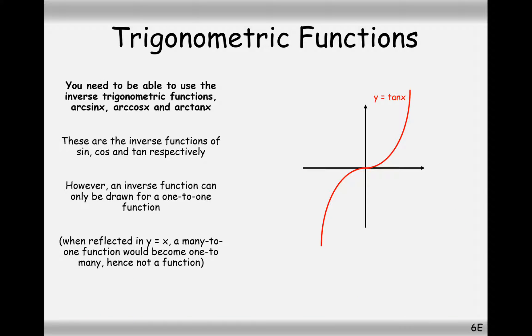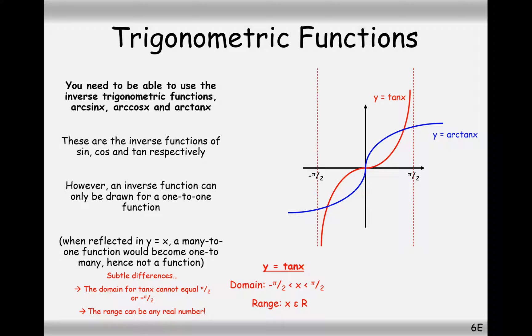And the tan graph, well, the tan graph only needs restricting in between its asymptotes, minus pi by 2 and pi by 2. Draw in your line for y equals x, and then reflect it in that line there. And this is what the shape of the graph looks like here.